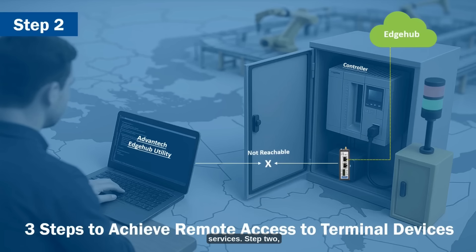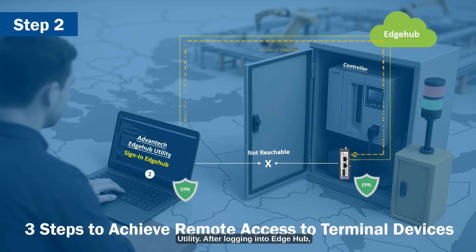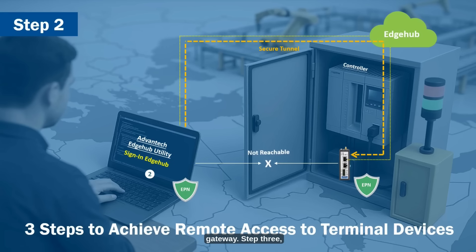Step 2: Computers originally on a different domain from ECU — personnel only need to install Edge Hub utility. After logging into Edge Hub, we can enable remote channel access to the ECU gateway.